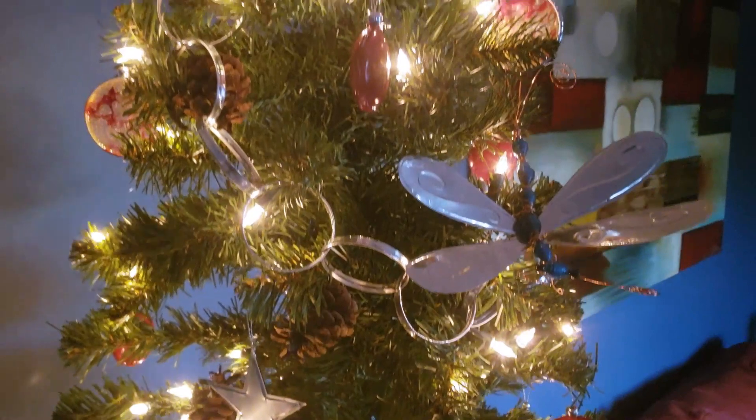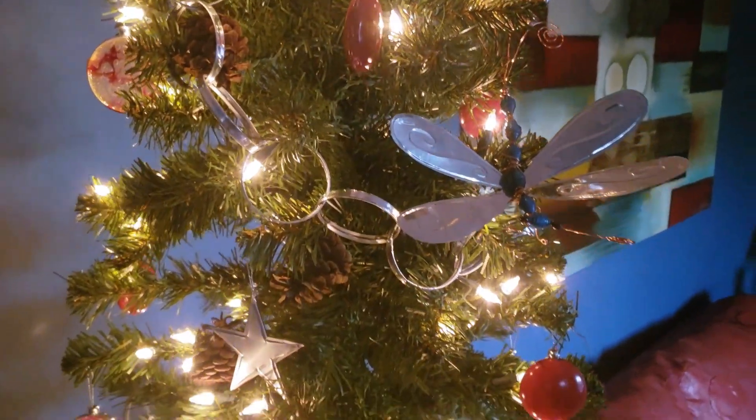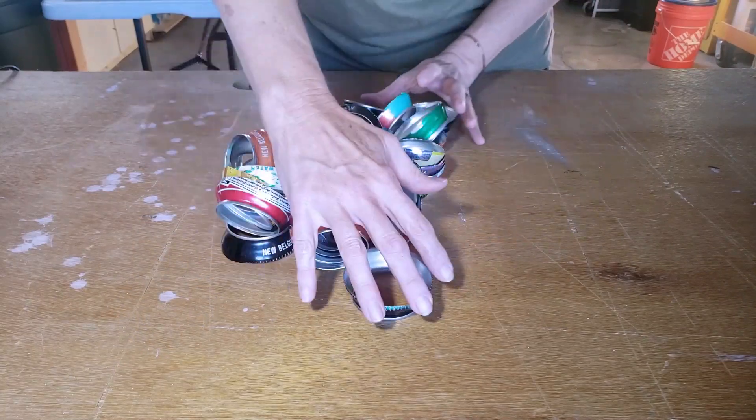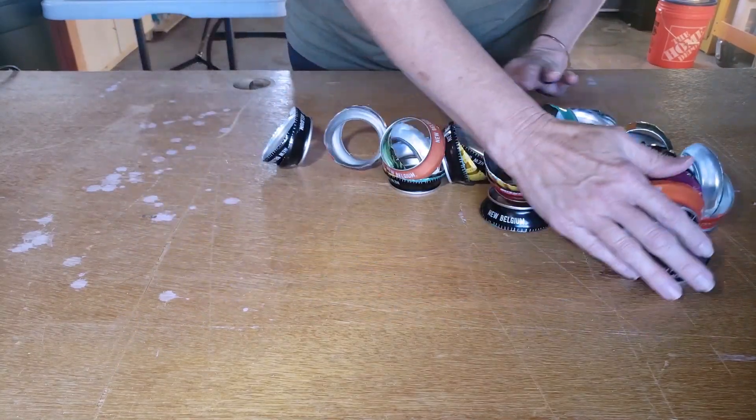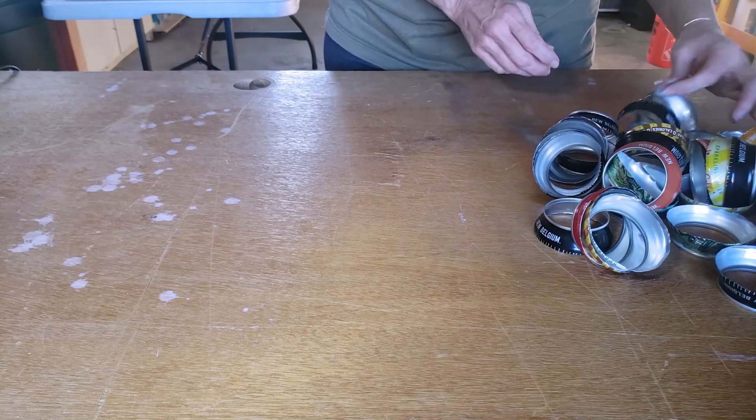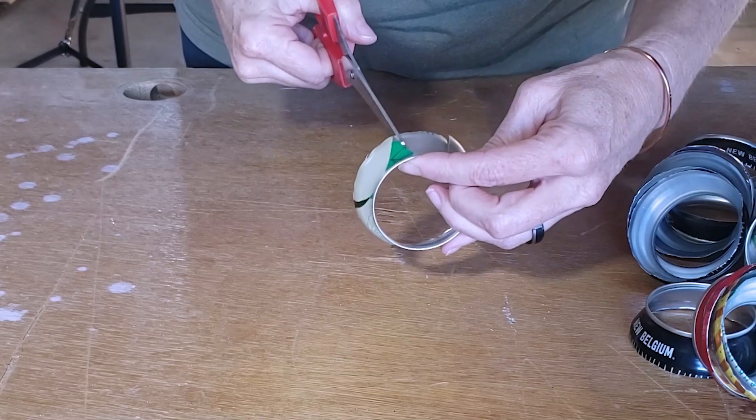Project number two is this giant chain garland made from the can rings and this project does take a lot of rings to make a garland that's long enough to go around a tree or really hang off of anything so you'll want to make sure that you save a lot of cans if you decide to do this project.